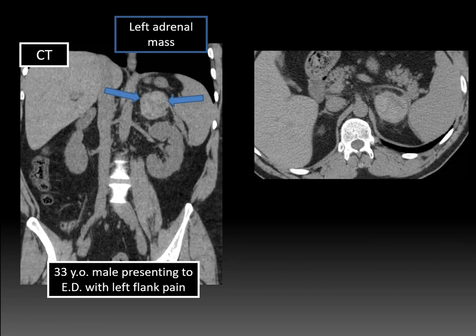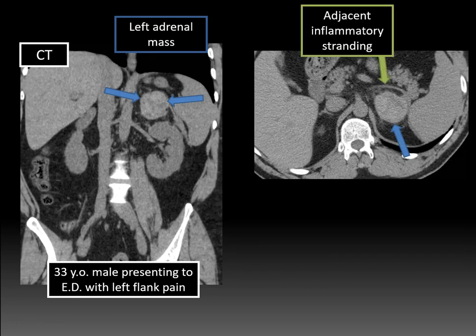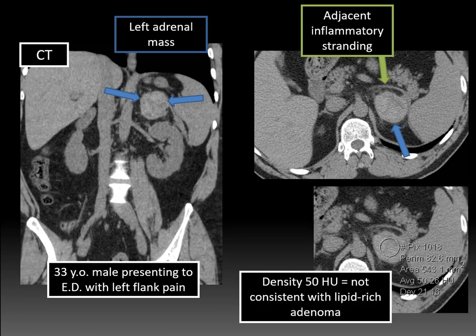Looking at the axial images, you can see the mass there with some periadrenal fat stranding denoted by the green arrow. That's due to fluid and hazy infiltration of the surrounding fat. If we measure the density of this mass by placing our region of interest down, we get a density of 50 Hounsfield units. The Hounsfield unit is the unit of density we use to calculate density on CT. And if you've seen the adrenal adenoma lecture, you know that this is not consistent with a lipid-rich adenoma — adenomas have a density of 10 Hounsfield units or less when they're lipid rich.